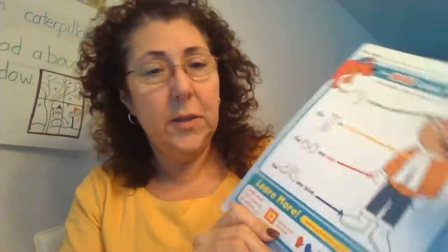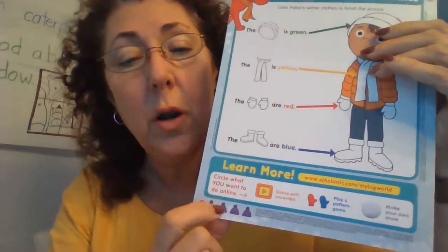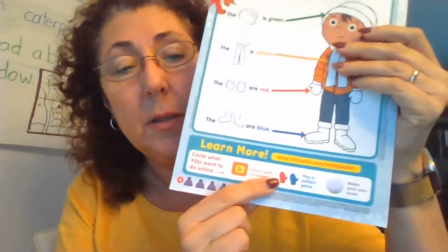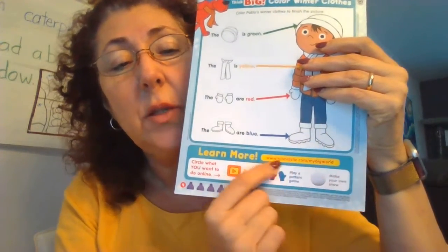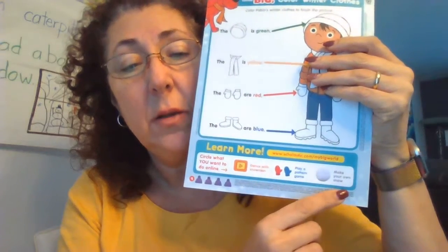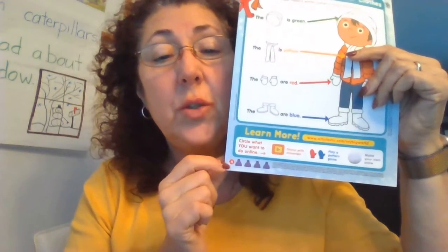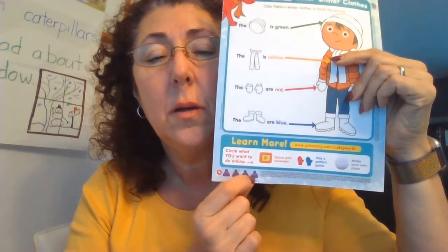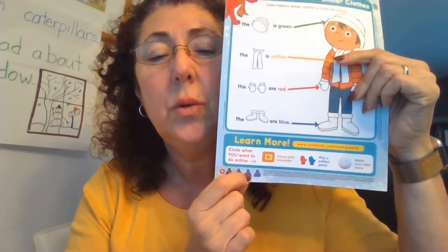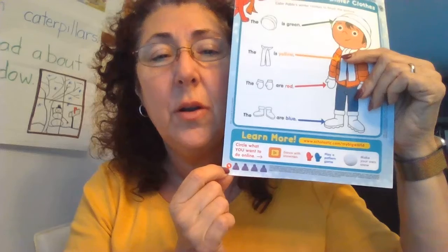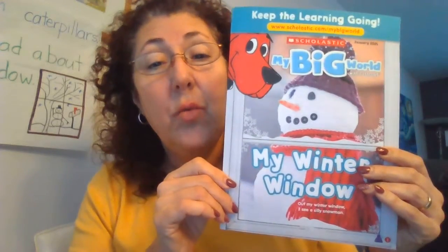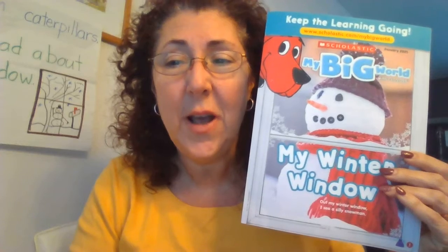It says learn more — circle what you want to do online. If you ask someone you love to help you go to this website, there are some games to play. The last thing I need you to do is count these hats. Ready? One, two, three, four — and this is the number four. Alright boys and girls, have fun with your scholastic reader and I'll see you next time. Bye bye!